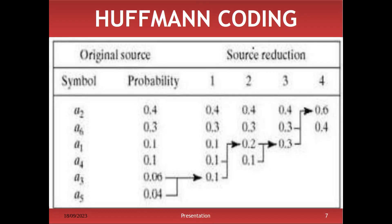Here is an example of Huffman coding. There are six symbols: A1, A2, A3, A4, A5, and A6. Each symbol has an individual probability value. First, A3 and A5 are combined to get 0.1. Then 0.1 and 0.1 are combined to get 0.2. Then 0.1 and 0.2 are combined to get 0.3. Then 0.3 and 0.3 are combined to get 0.6, which is the final value. This is how we compress the probability values.